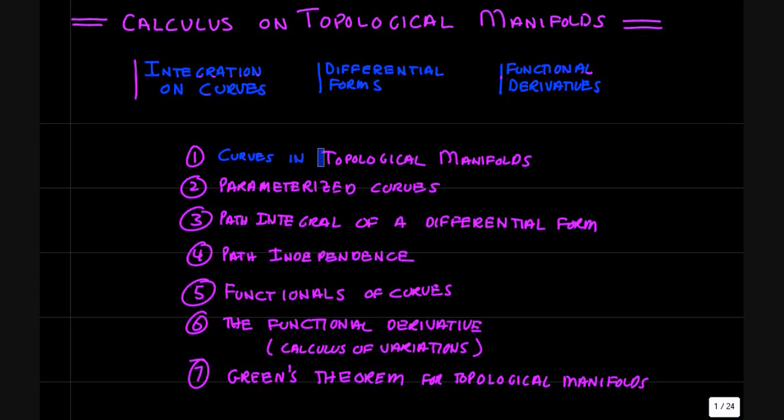We're going to be talking about how you define curves on topological manifolds by means of parameterized curves. The parameter is a real number on an interval. Once we have that, we can define the path integral of a differential form along the curve and talk about the idea of path independence. Why some differential forms, when integrated, do not depend on the path of integration. Some do.